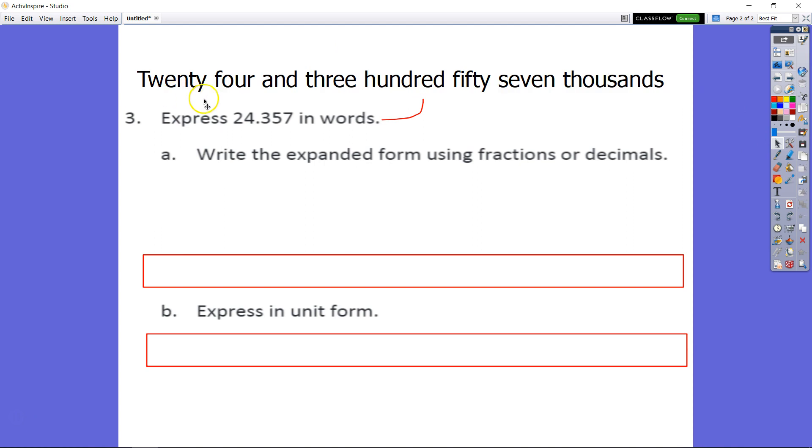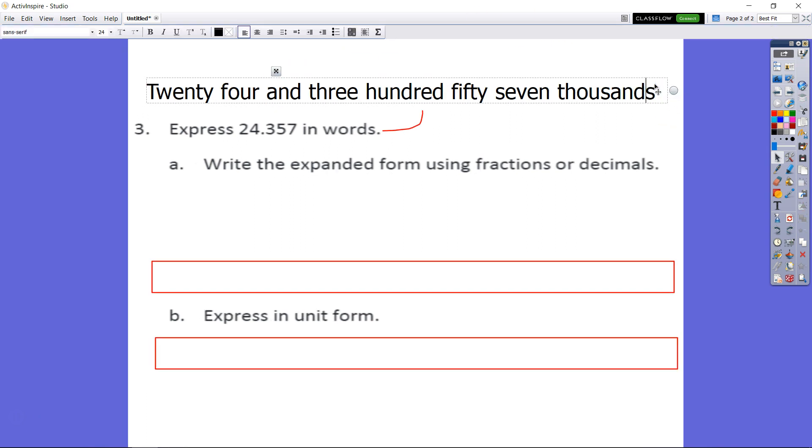You will write out every word, including the decimal. You're writing that out as 'and'. So you have 24 and 357 thousandths—that should be T-H-S, thousandths.